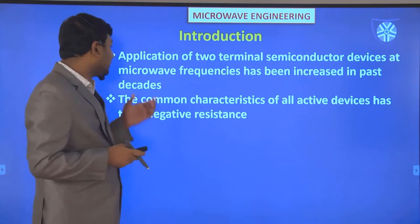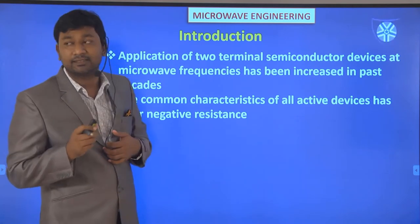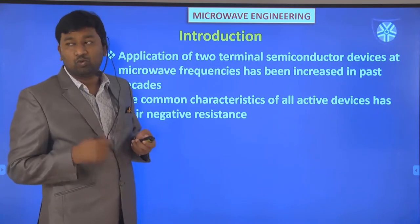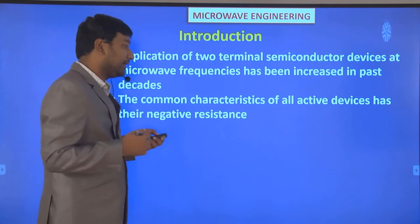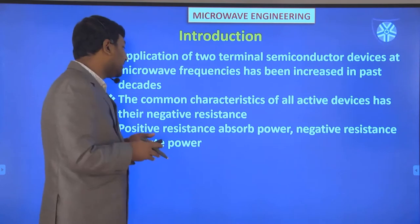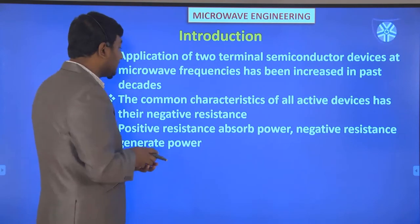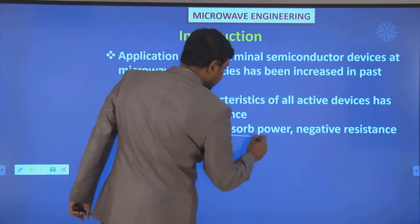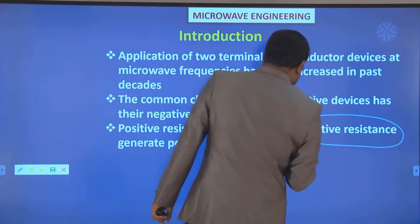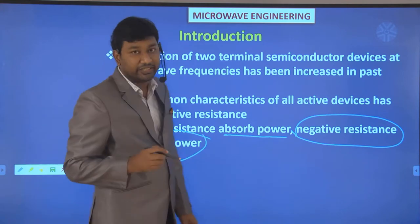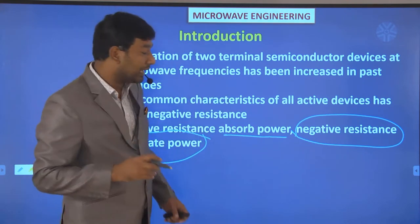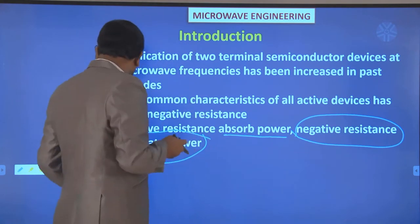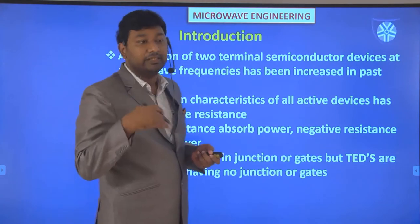A common characteristic of all active microwave devices is their negative resistance property. Positive resistance absorbs power, whereas negative resistance generates power — that's why negative resistance devices are called active devices and positive resistance devices are called passive devices.